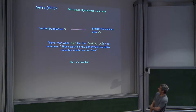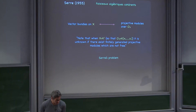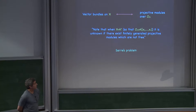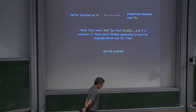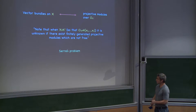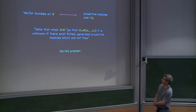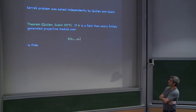In FAC, Serre writes that it's not known, when X is just affine R space, if there's any finitely generated projective module which is not free. He's thinking by analogy with topology, where vector bundles over a contractible space are all trivial. This became known as Serre's problem, and eventually as Serre's conjecture — Serre has that kind of karma. That problem was solved independently in the 70s by Quillen and Suslin.